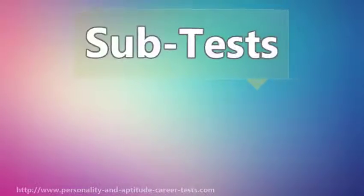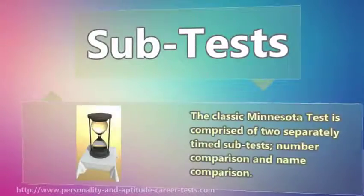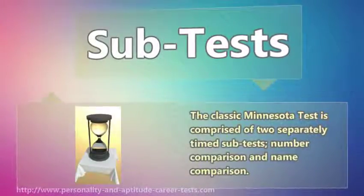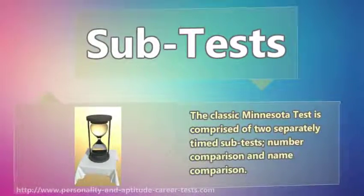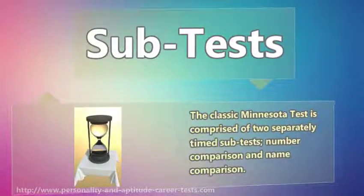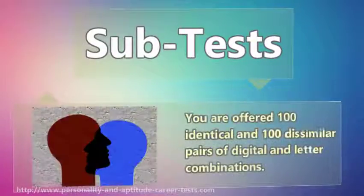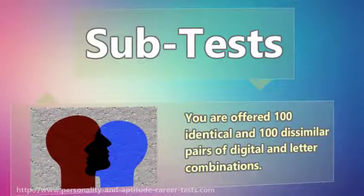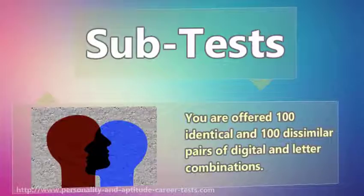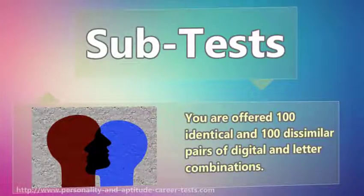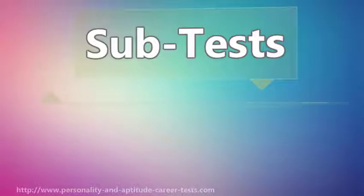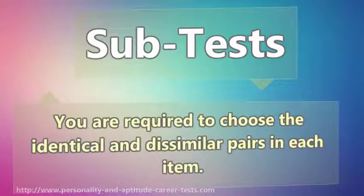The classic Minnesota Test is comprised of two separately timed subtests: number comparison and name comparison. You are offered 100 identical and 100 dissimilar pairs of digital and letter combinations, and you are required to choose the identical and dissimilar pairs in each item.